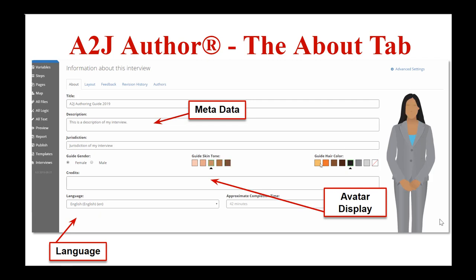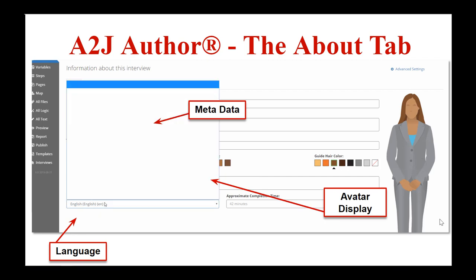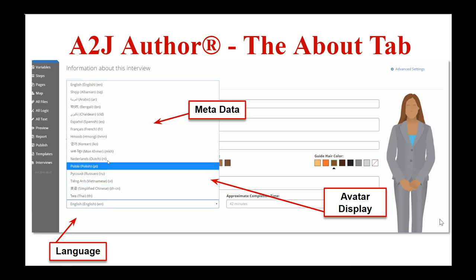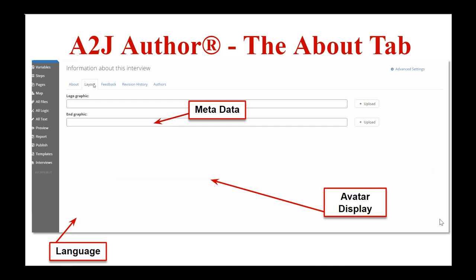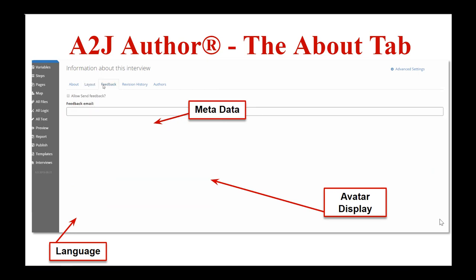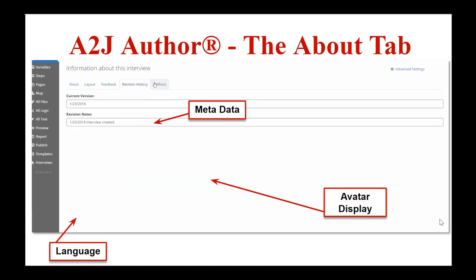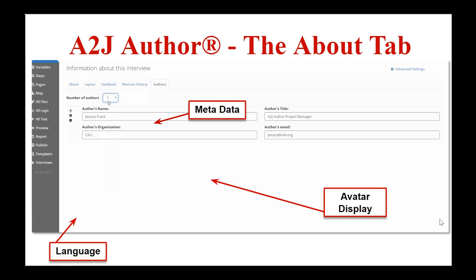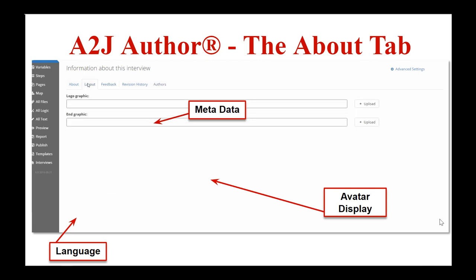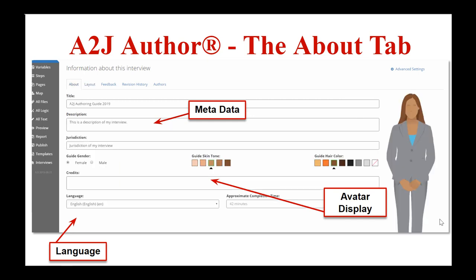There are feedback options which allow end users to provide feedback to you. In order to enable that, you have to specify an email address. All feedback also goes to our development team to ensure that there aren't any errors with the software itself for the end user. You can also on this tab select an avatar to be the guide for your end user — either a male or female guide avatar, with five different skin tones and eight different hair options. Finally on this tab, you can also select the language for the interview — there are 16 languages to choose from.